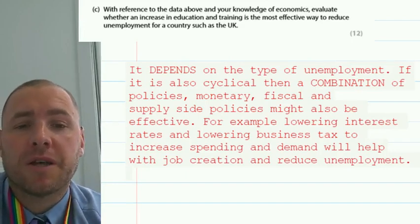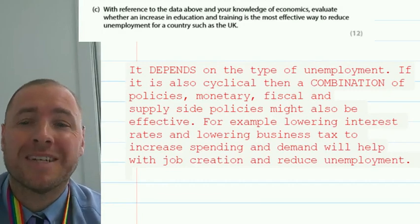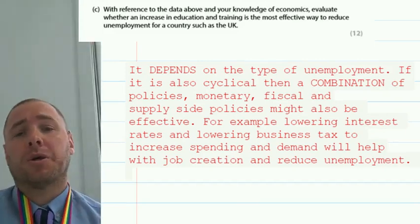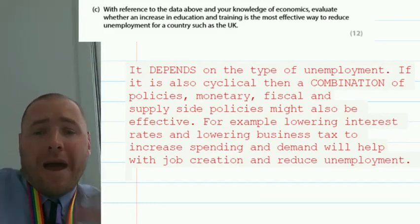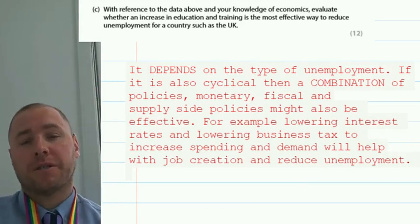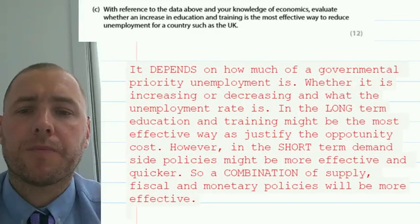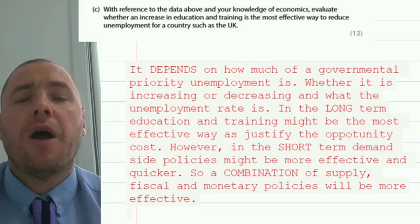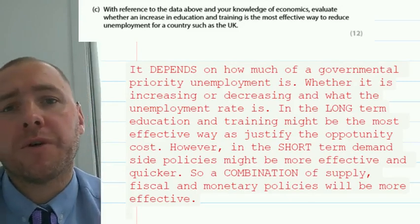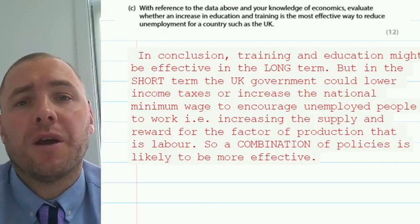Here is a 'depends' argument and combination: it depends on the type of unemployment. If it's also cyclical, then a combination of monetary, fiscal, and supply-side policies might be effective — for example, lowering interest rates and lowering business tax to increase spending and demand, helping with job creation and reducing unemployment. So it depends on how much is structural unemployment, how much is cyclical, how much is seasonal. We can use X, Y, and Z to help reduce unemployment. Here is another conclusion using 'depends' and 'combination', bringing in short-term and long-term factors — pause the video and have a read.